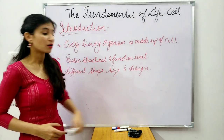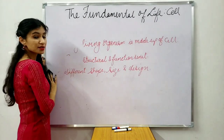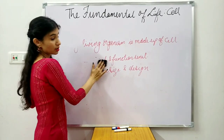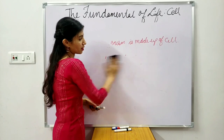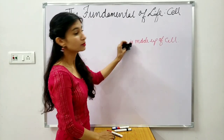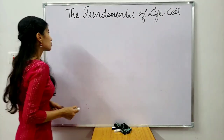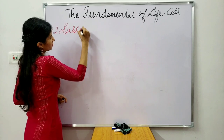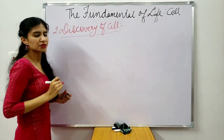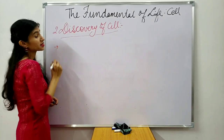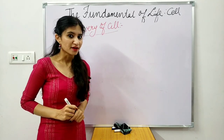Now moving to the second topic: the discovery of the cell. Was the cell discovered all at once? No, because at the time the cell was being discovered, science and technology were not very advanced — microscopes were quite primitive. The cell was discovered by an English scientist named Robert Hooke, who discovered it in the year 1665.